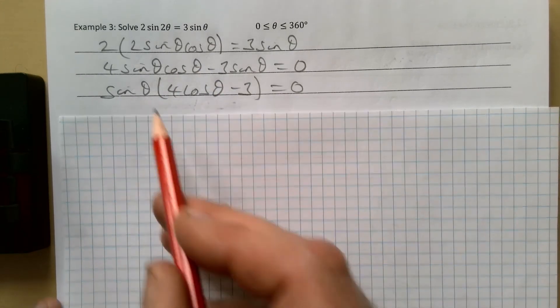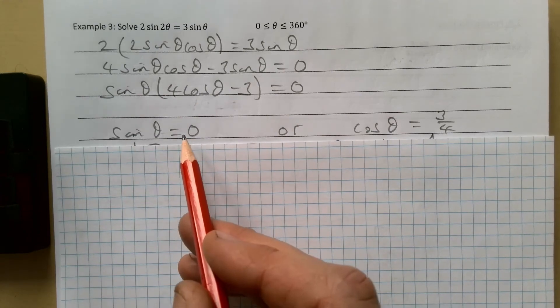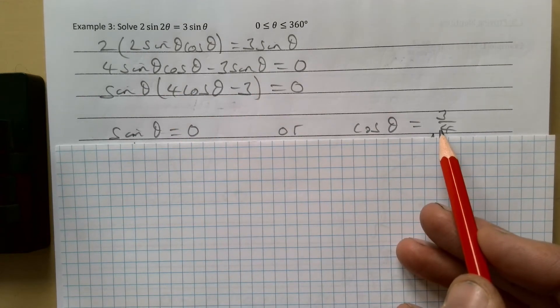That means either sine θ equals zero, or cos θ rearranged gives us three quarters.